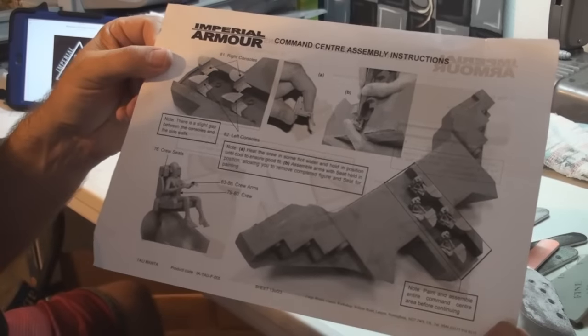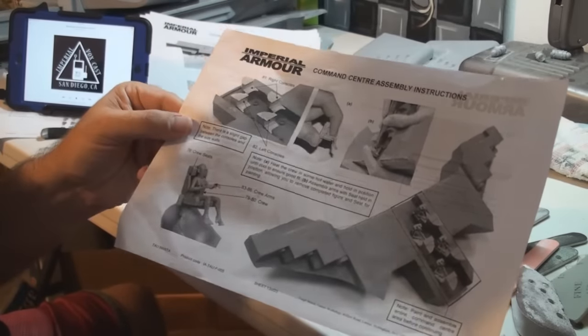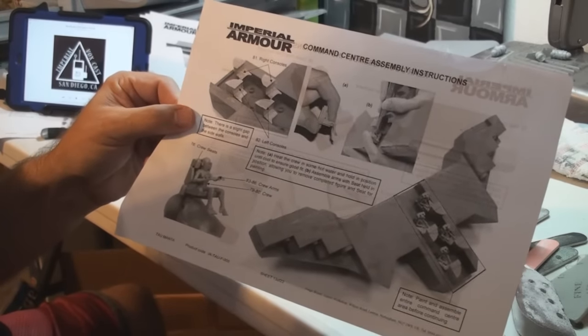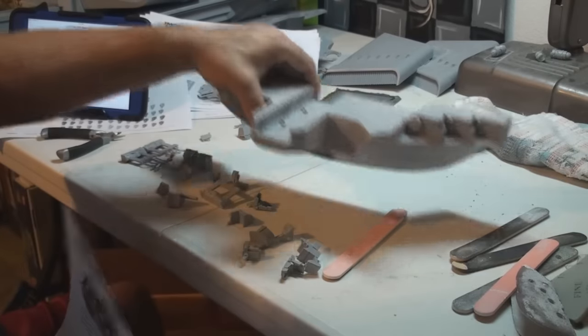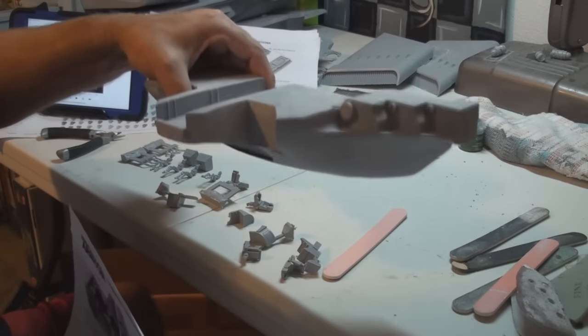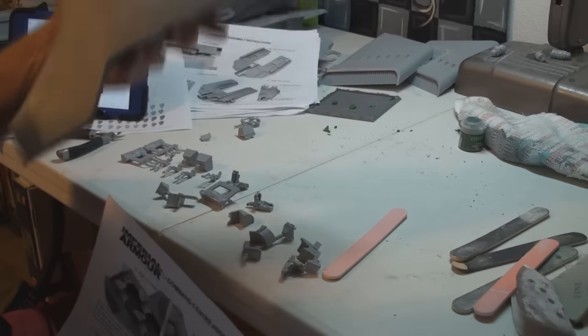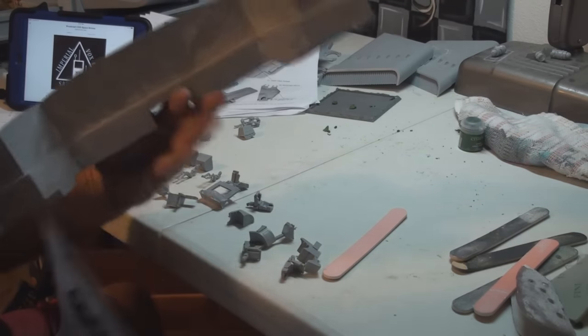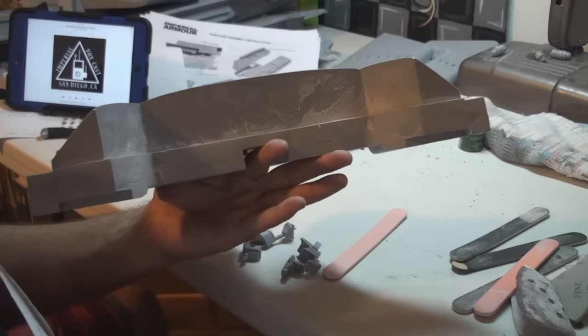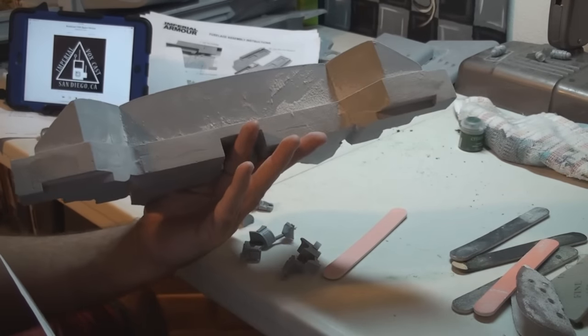Alright guys, here's the next stage of assembly. This is the command center assembly, one honking super piece of resin. I bet this thing is five to ten pounds by itself. It weighs a lot. That's how big it is on the thickness in the back. You can see I've done some sanding on this.